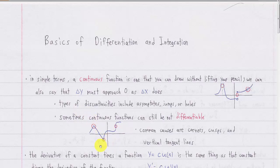The same applies for a cusp. And at a vertical tangent line, the derivative cannot exist because the slope of the tangent line is undefined — if the change in x is zero, you can't divide by zero to find the slope of this tangent line.